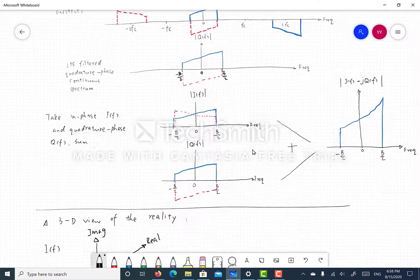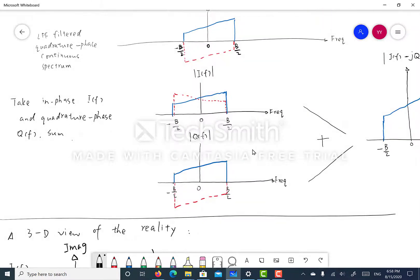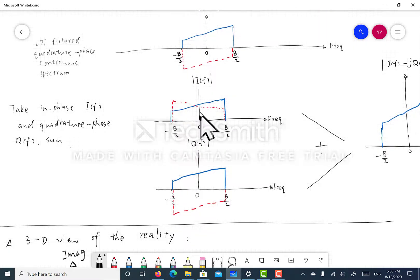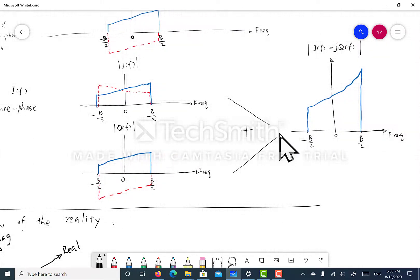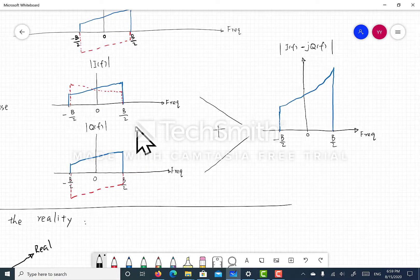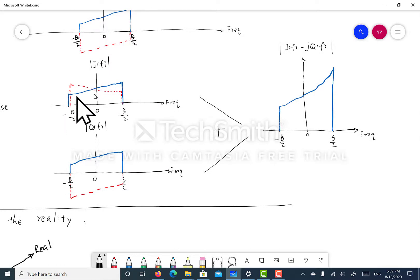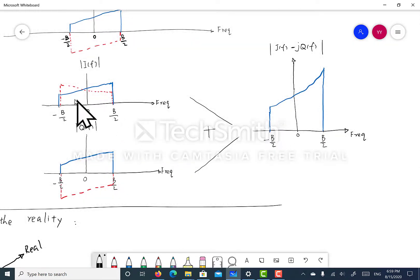If we take the in-phase and the quadrature phase, what's being filtered, the term that remains after filtering, and we add them together, you will see that the red dotted line, which represents the mixing product of the negative frequency component, they are equal in magnitude but opposite in direction, so they get canceled out. But the solid blue line, which represents the mixing product of the positive frequency component, they added up.